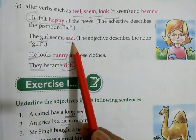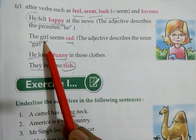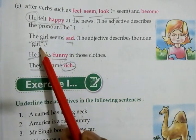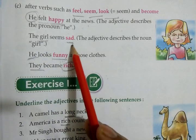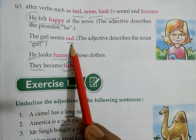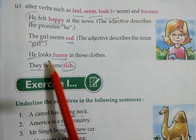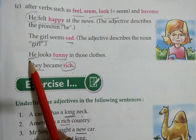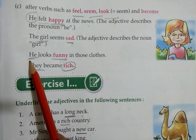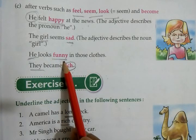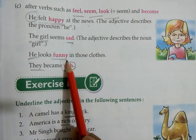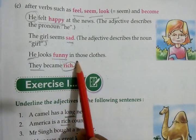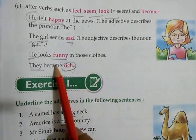'The girl seems sad.' Girl is noun — ladki kaisi dikhti hai? Sad, dukhi. Sad is adjective. 'He looks funny in these clothes.' He is pronoun — woh kaisa hai? Funny — bahut mazakiya dikhta hai in kapdon mein. Funny is adjective.